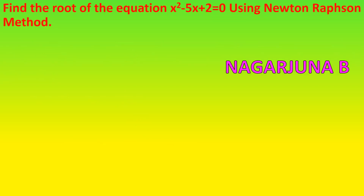Find the root of the equation x squared minus 5x plus 2 equals 0 using the Newton-Raphson method. Here, the near value has not been given — that means the initial guess has not been given. We need to find it and start from there. So, solution: given x squared minus 5x plus 2 equals 0. The first thing we have to do is consider the given equation as f of x.